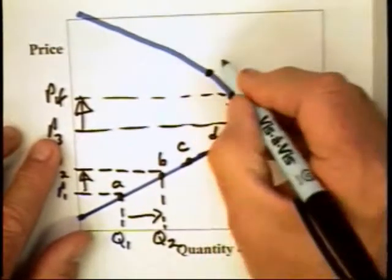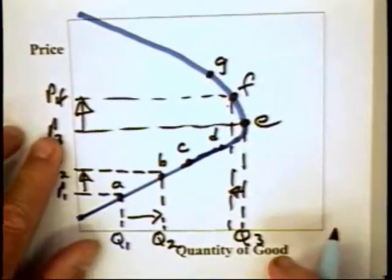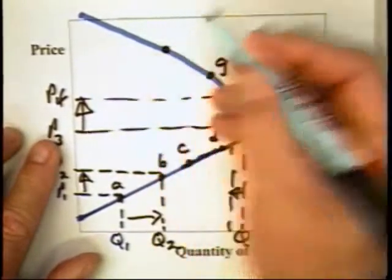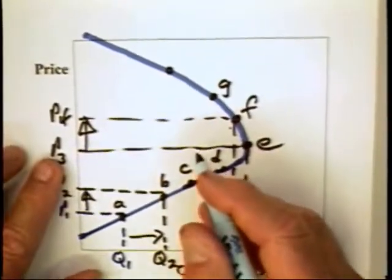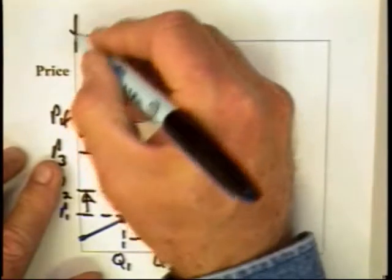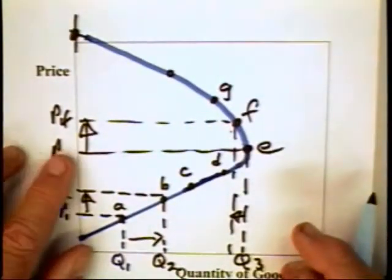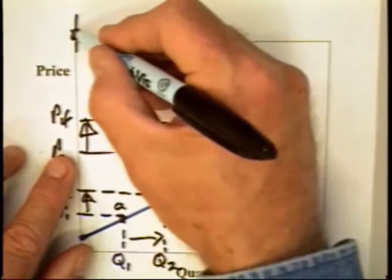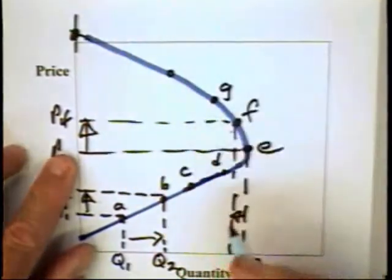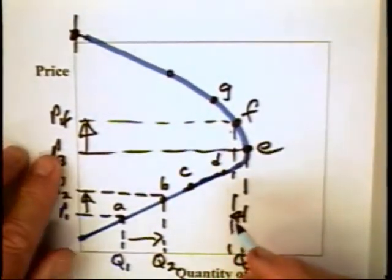For that matter, point G could be more profitable. But at some point as you move up this curve, price increases become less profitable because at some extremely high price, there will be no units sold, no revenue, and so forth.